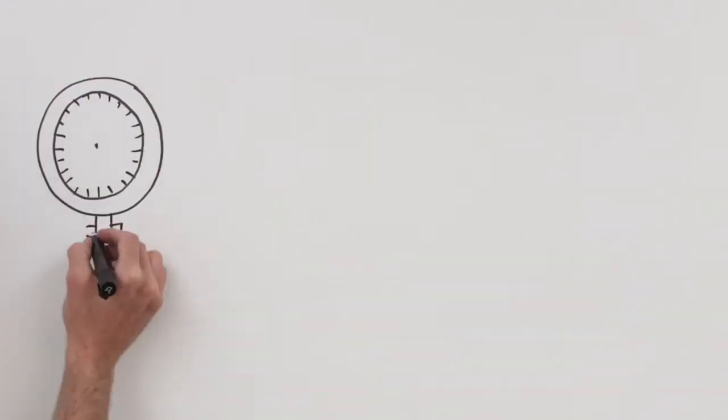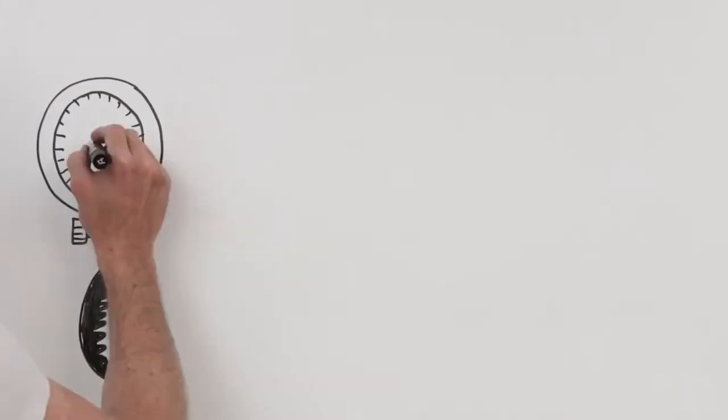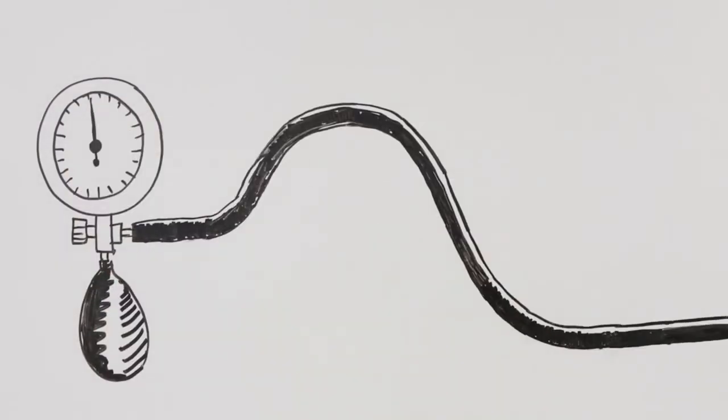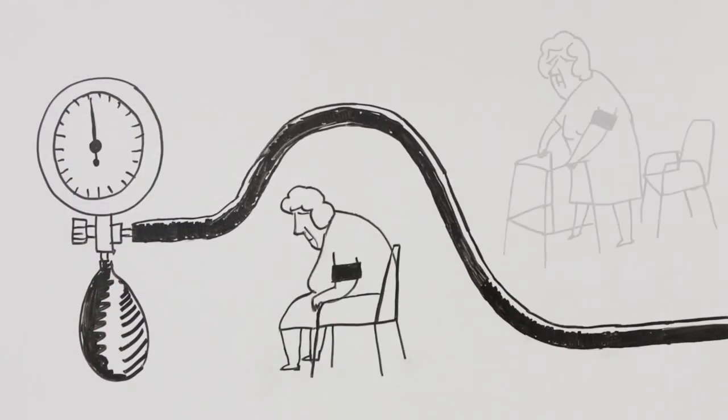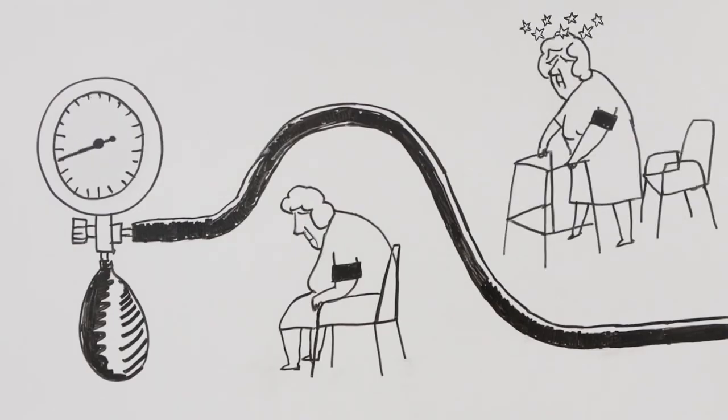The review team discovered that her blood pressure was dropping very low when she stood up, postural hypotension. It often leads to falls and faints in older people. We stopped a couple of her cardiac medications to try and solve this problem.